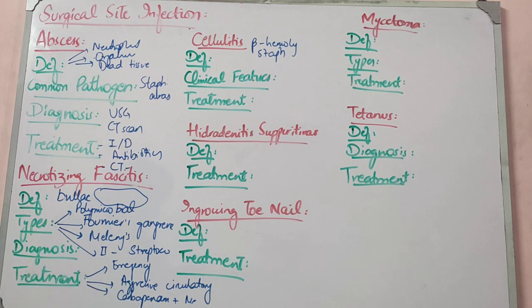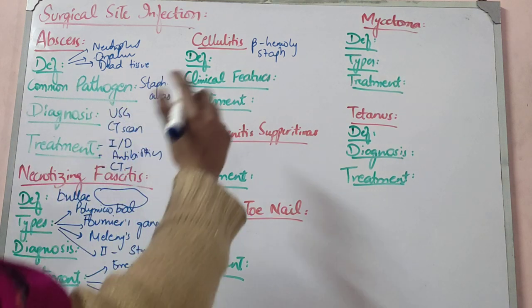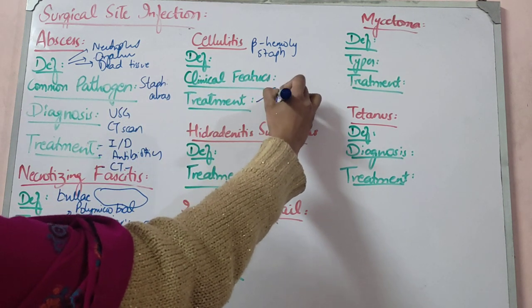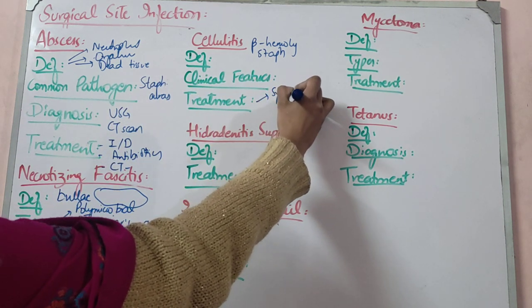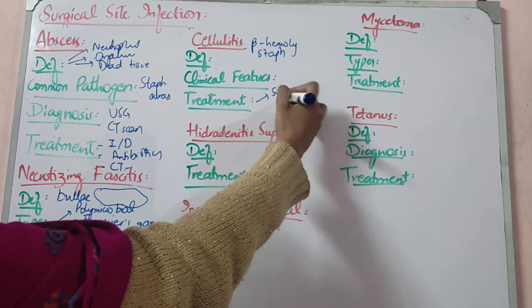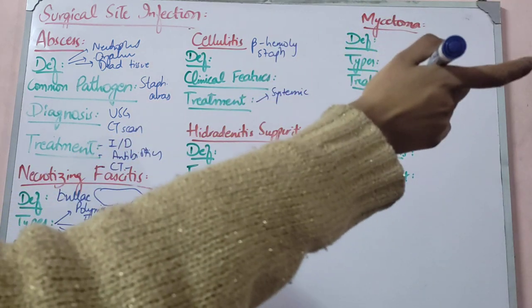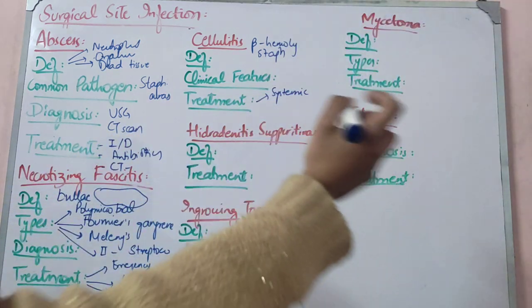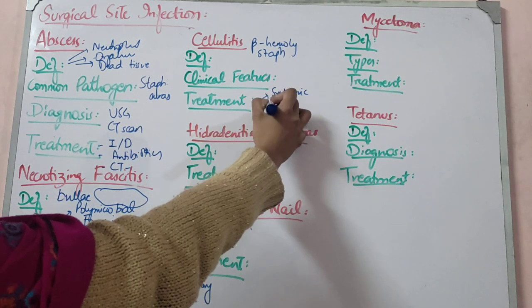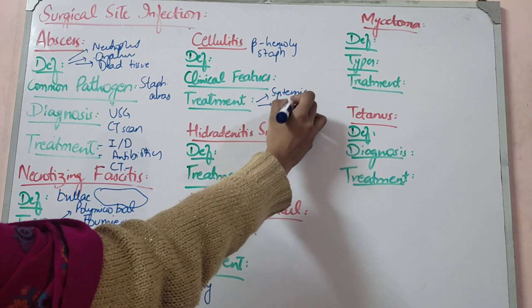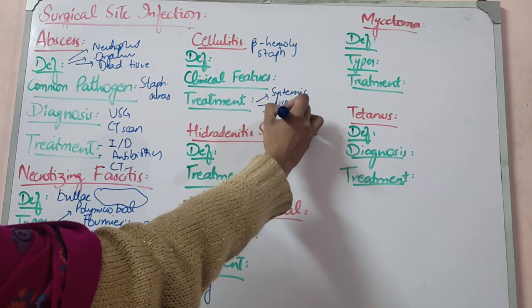Treatment is systemic antibiotics — broad-spectrum IV antibiotics — along with analgesia and painkillers in the form of NSAIDs, and limb elevation.